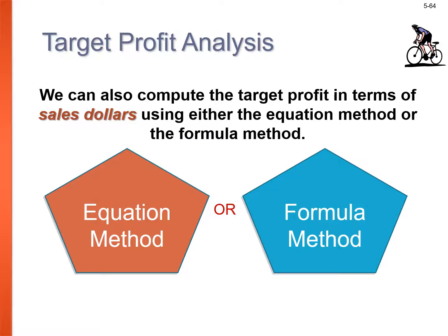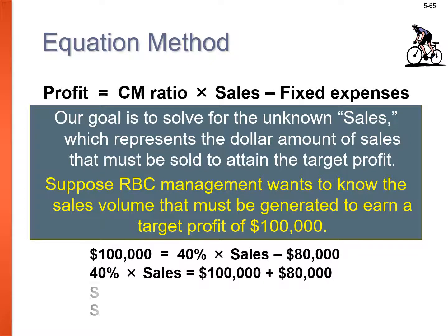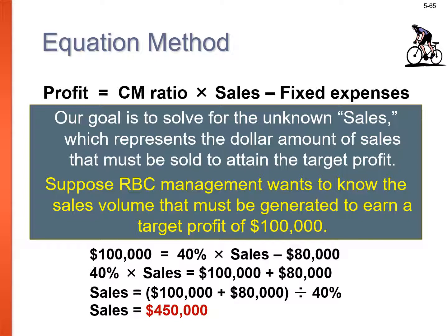To find the sales dollars needed for a $100,000 profit: profit = CM ratio × sales − fixed expenses; $100,000 = 40% × sales − $80,000; 40% × sales = $180,000; sales = $180,000 ÷ 40% = $450,000. The company must achieve $450,000 in total sales to earn a $100,000 target profit.